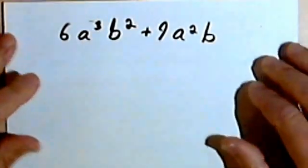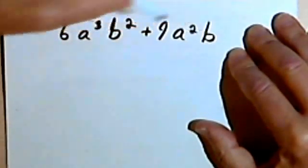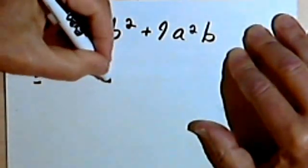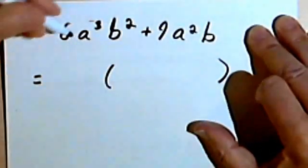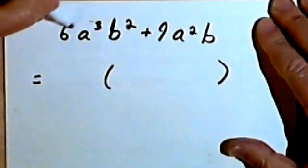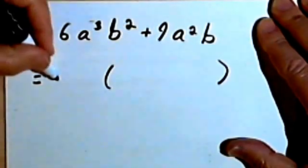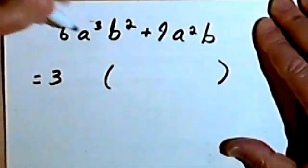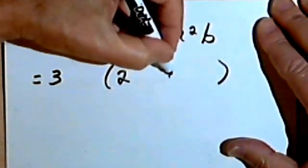Let's look at another one. After you've done enough of these, they just become kind of automatic. I've got 6a to the third b squared plus 9a squared b, and I want to find out what monomial was multiplied by what polynomial. Looking at the coefficients first, I've got a 6 and a 9, and I realize that both of them came about by being multiplied by 3. So I'm going to factor out a 3. Factoring a 3 out of the 6 is going to leave me with a 2, and factoring a 3 out of 9 will leave me with a positive 3.